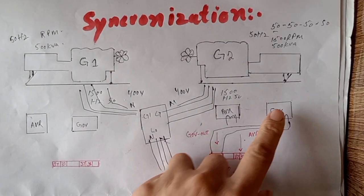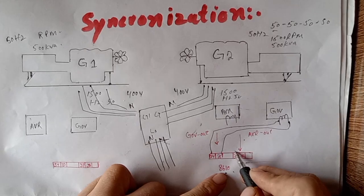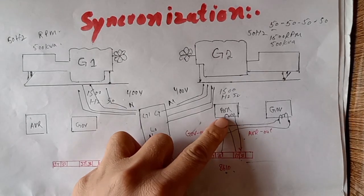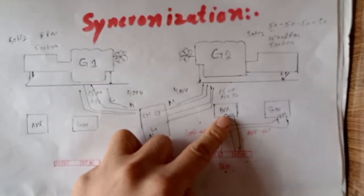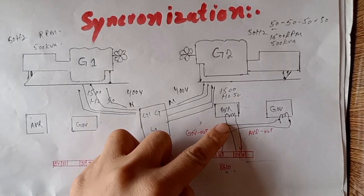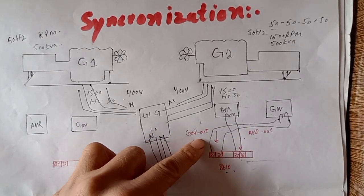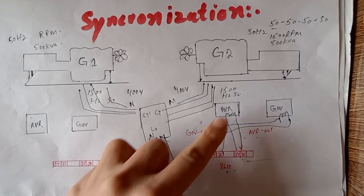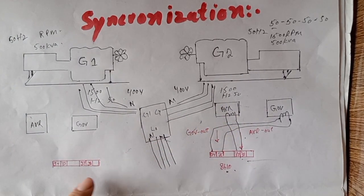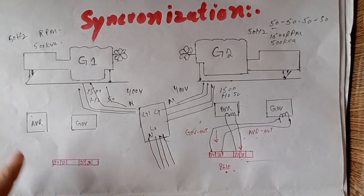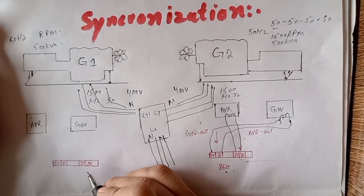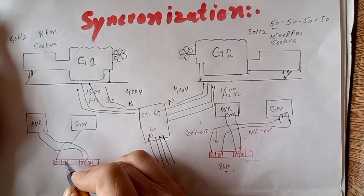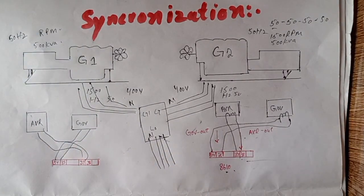The AVR also has remote control two terminals, and the DFC controller controls the AVR through the remote control potentiometer automatically. It applies 5 to 7 volts DC out of a maximum 10 volts DC to control the AVR and the governor. The same is done for the second generator — controlling both the AVR and the governor. Two wires go to the AVR and two wires go to the governor.